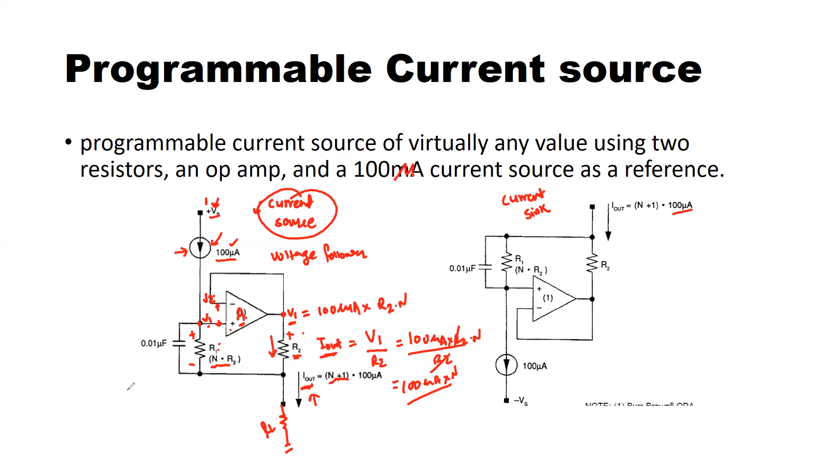This current source has a compliance with the negative rail of the operational amplifier. It can swing all the way to the negative rail. How? That too is also an exercise for you.